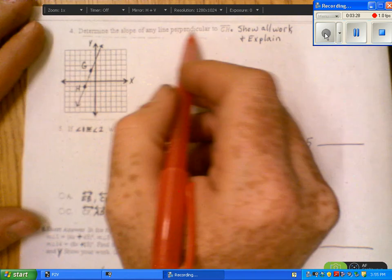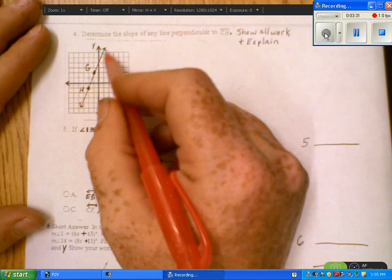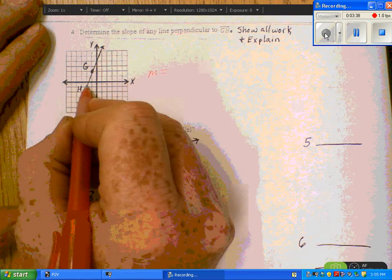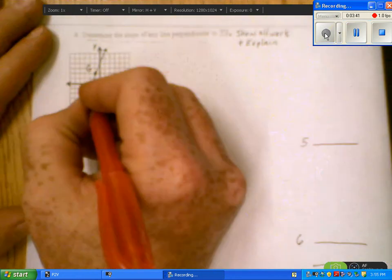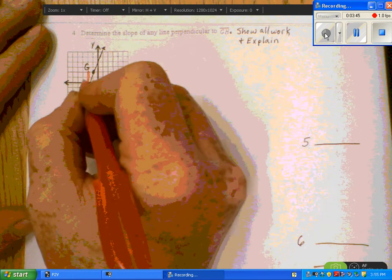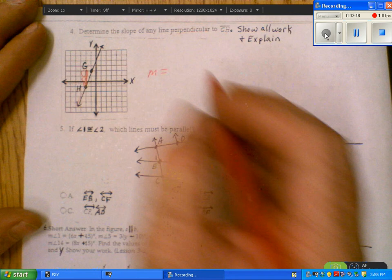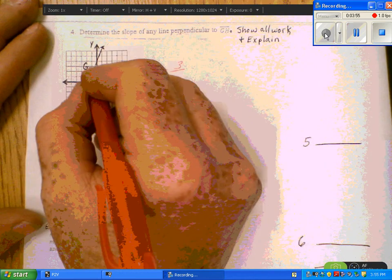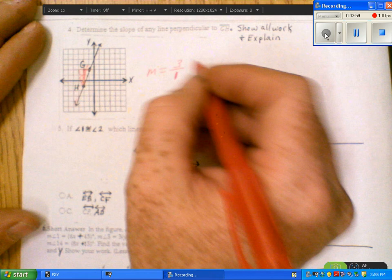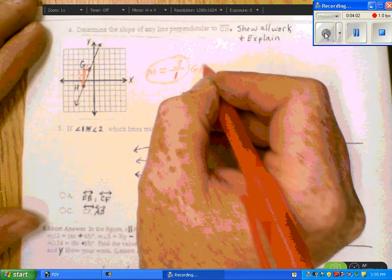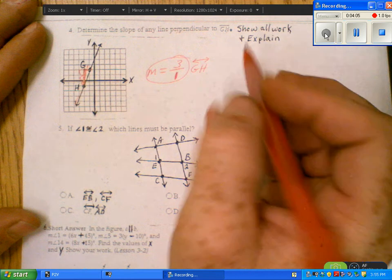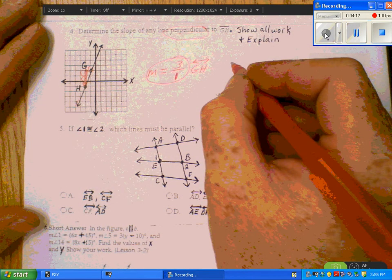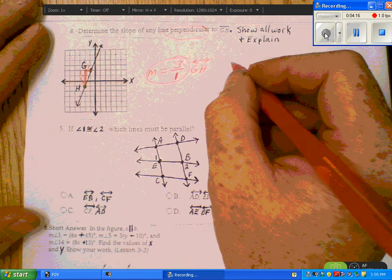Number 4. Determine the slope of the line perpendicular to line GH. This is line GH. The first thing I want to do is find the slope of line GH. You could use the slope formula to find the coordinates of these two points. The easier way probably is just to count. We have your rise, looks like you go up one, two, three. That's your rise. And then I go over one to the right. So that's your run. So the slope of line GH is 3 over 1.